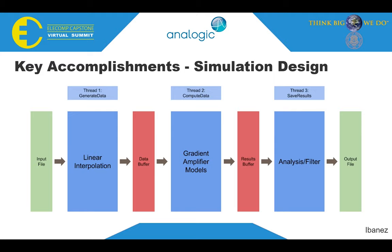When integrating the thermal and electrical models into the backend, a challenge we encountered was figuring out how we were going to handle the large file sizes that the software would be taking as an input and writing as outputs. Our initial approach was to perform the simulation by reading and performing computations on one section of the input file at a time. However, this was inefficient due to the high number of openings and writings to the files, so we decided to challenge ourselves to improve the performance by using multithreading. Our new simulation structure still has the reading of the file data, the computation of that data, and then the writing of the results — all done simultaneously, in a way that isolates the thermal models, meaning that only that part of the code changes when adding in or changing amplifier models.